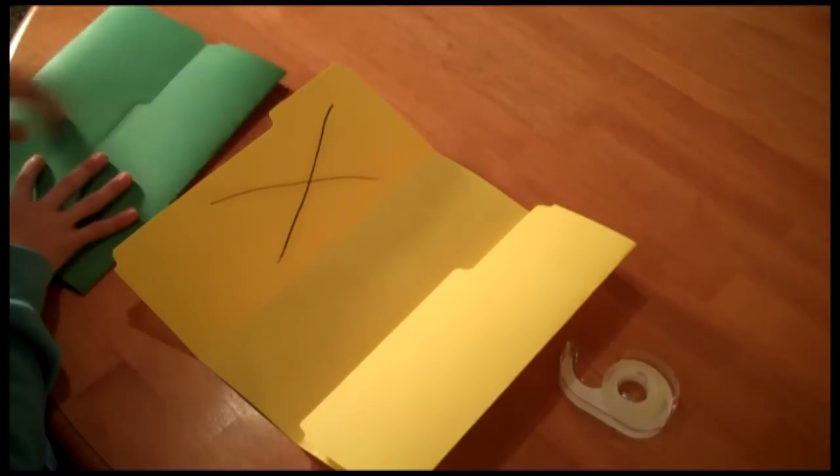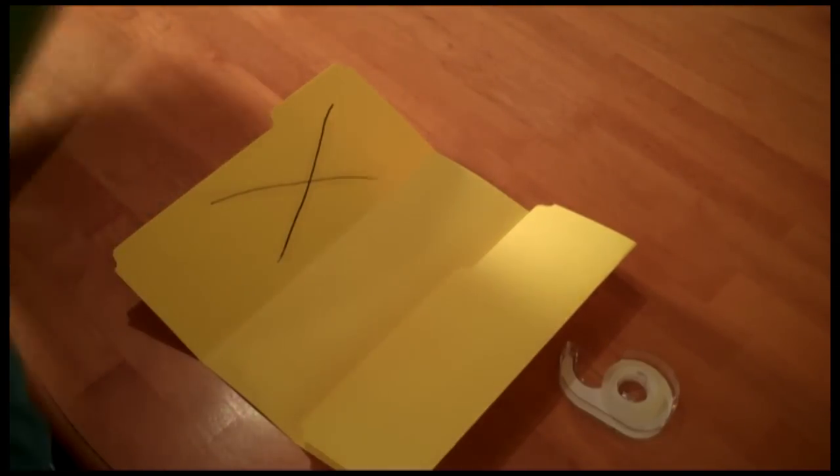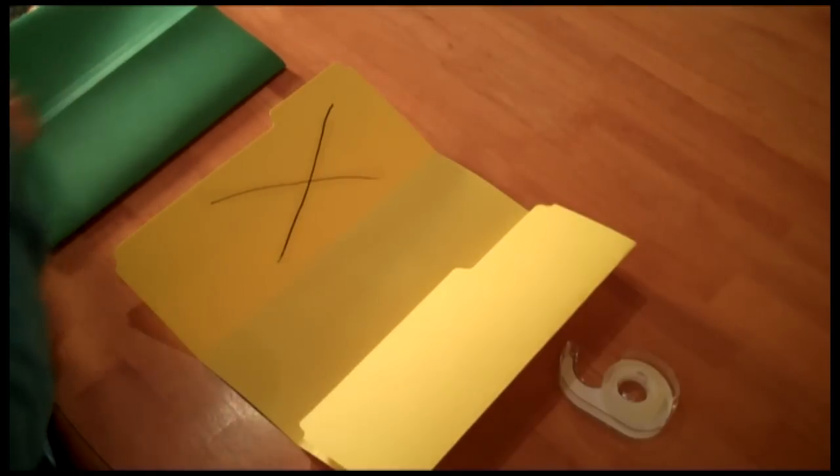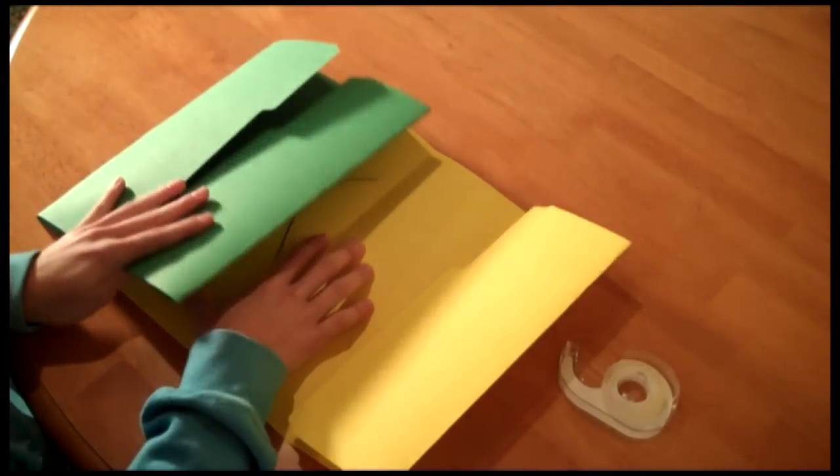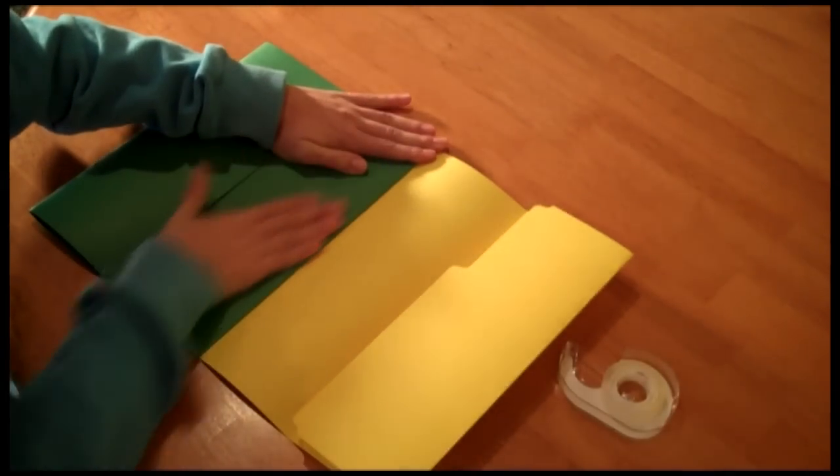Now, taking the second folder and making sure the flaps are closed, you're going to, on the right back side, press the folder down onto the X and smooth it out like so.